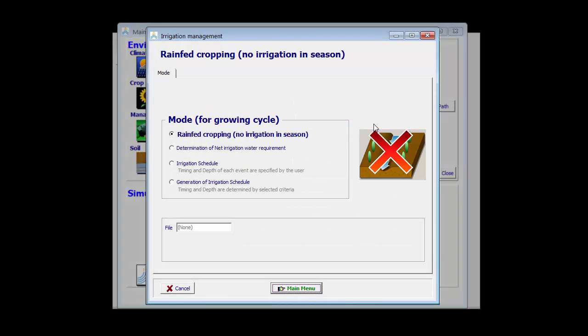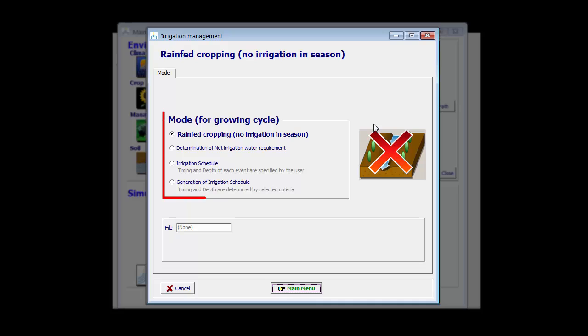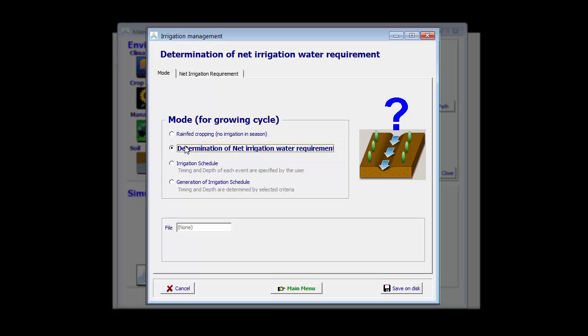By clicking here, I can see the different irrigation modes. I am interested in the determination of the net irrigation water requirement. AquaCrop adds another tab sheet, net irrigation requirement.